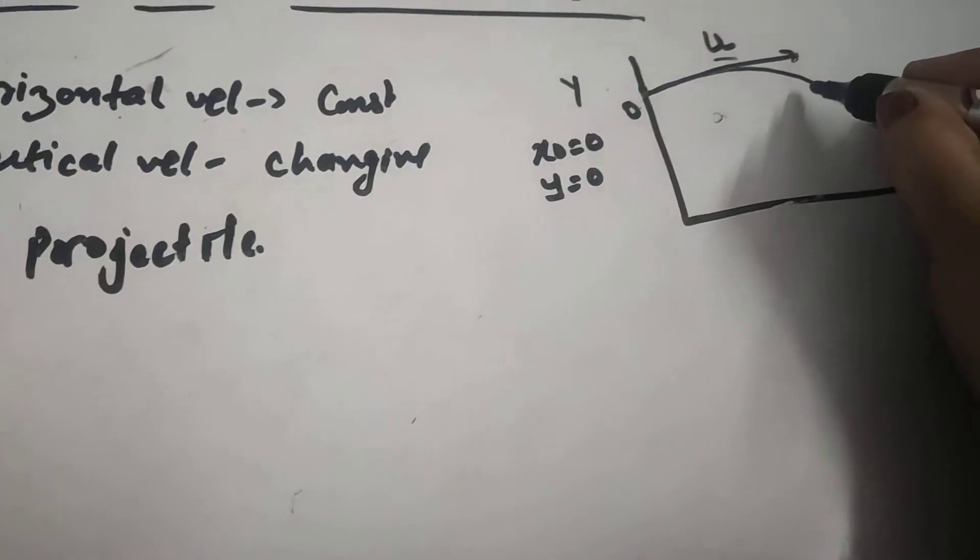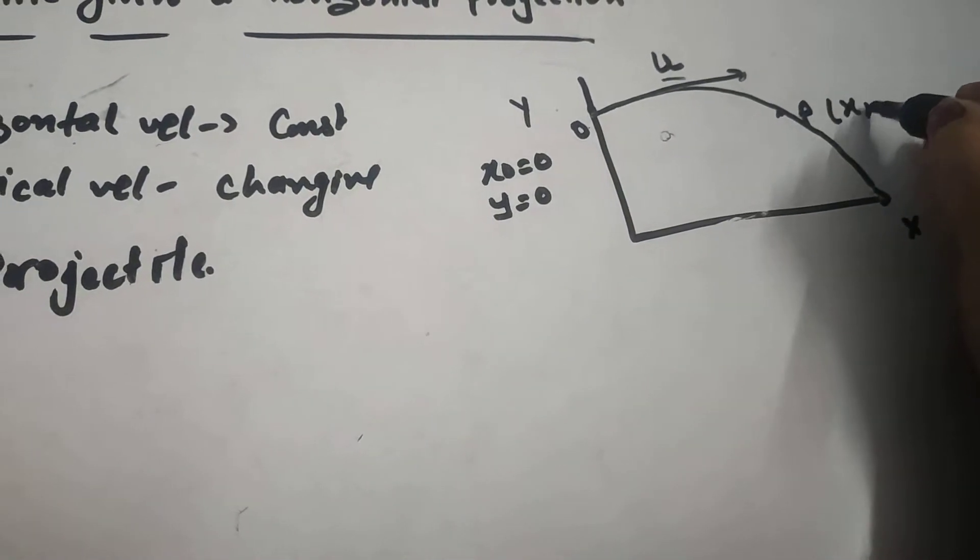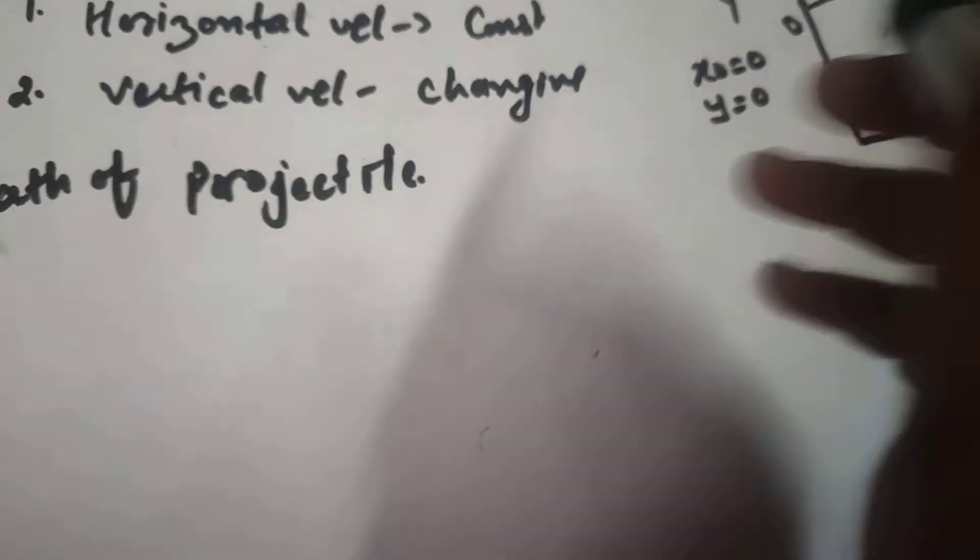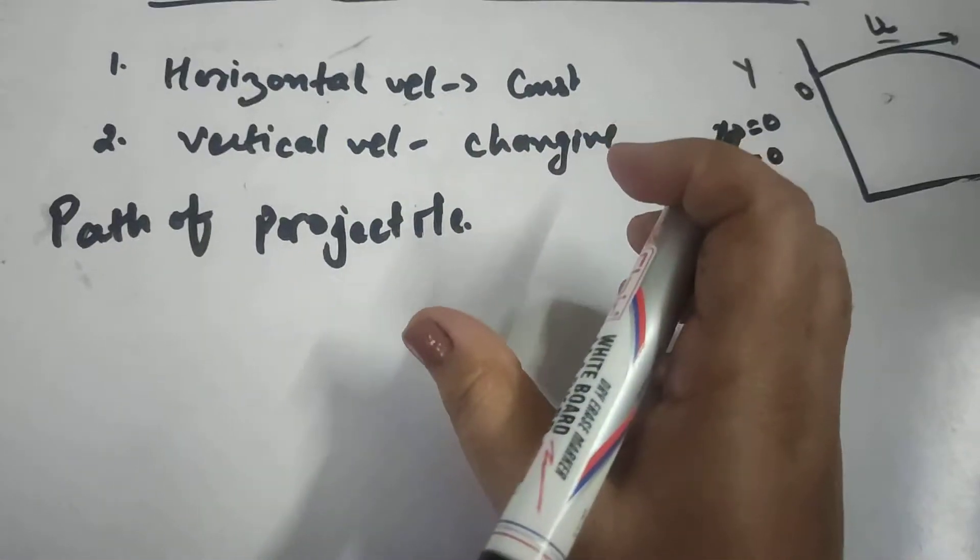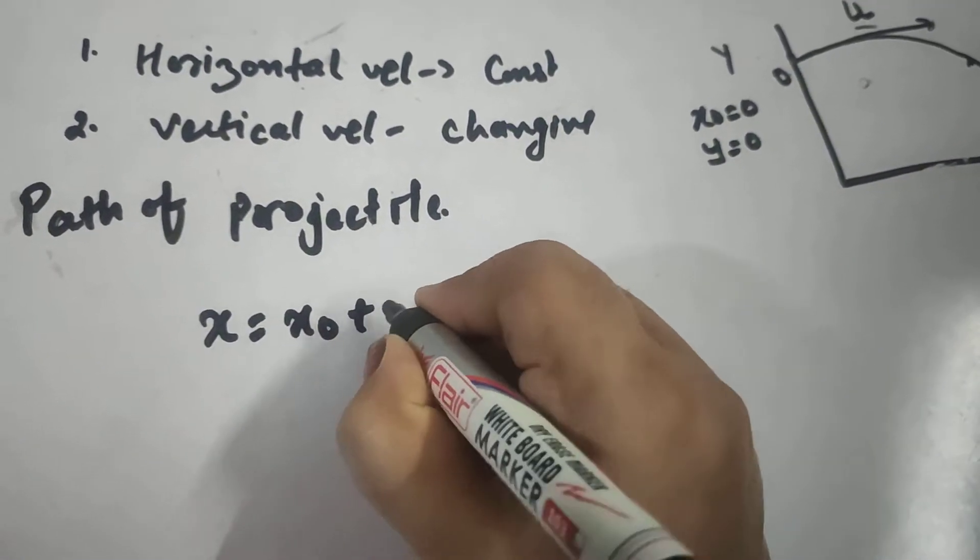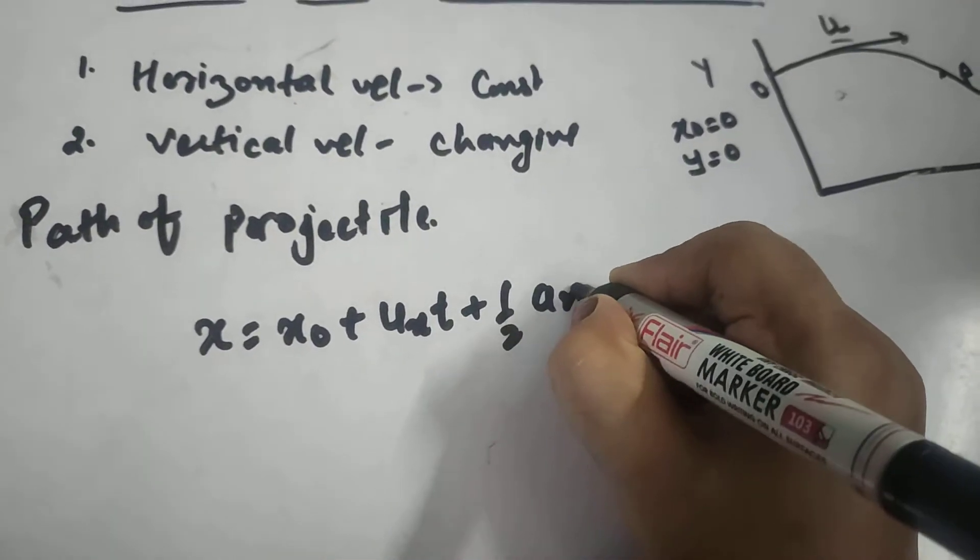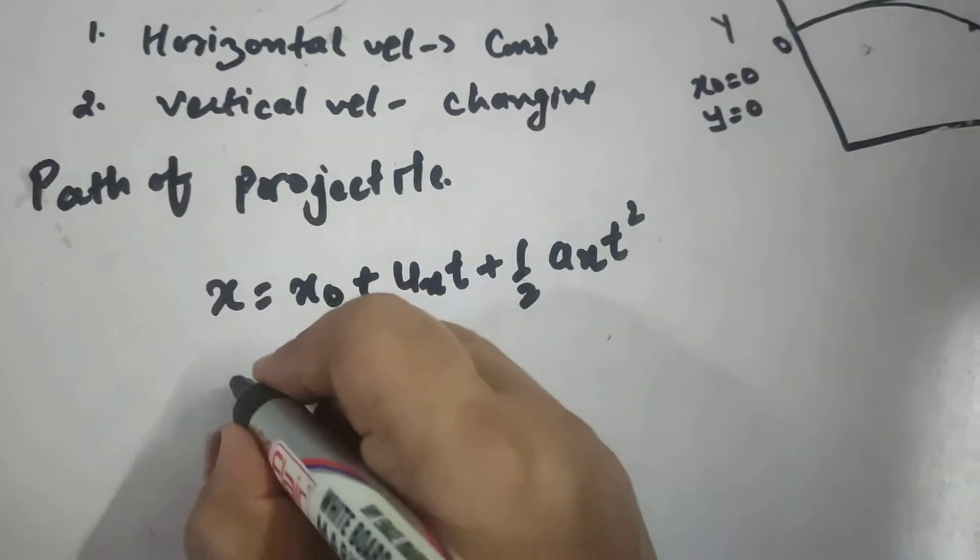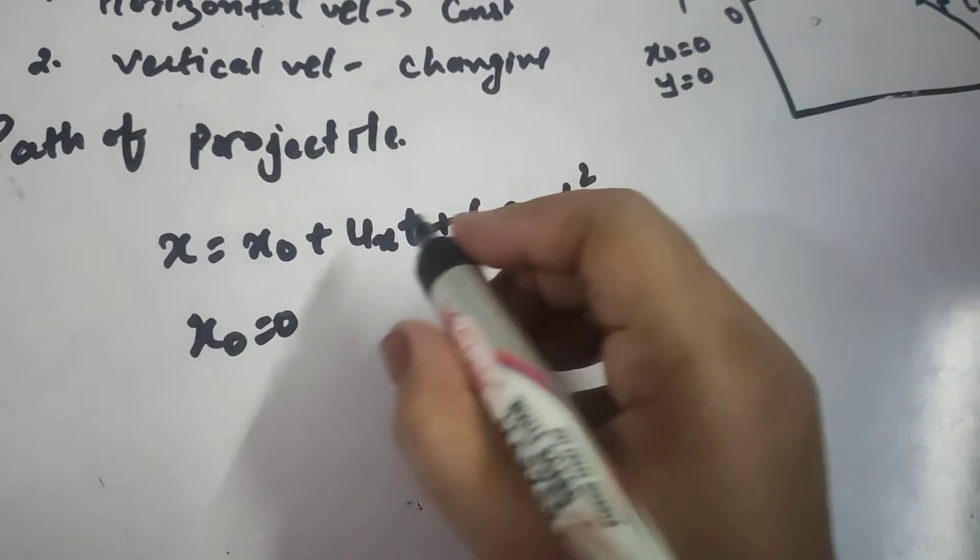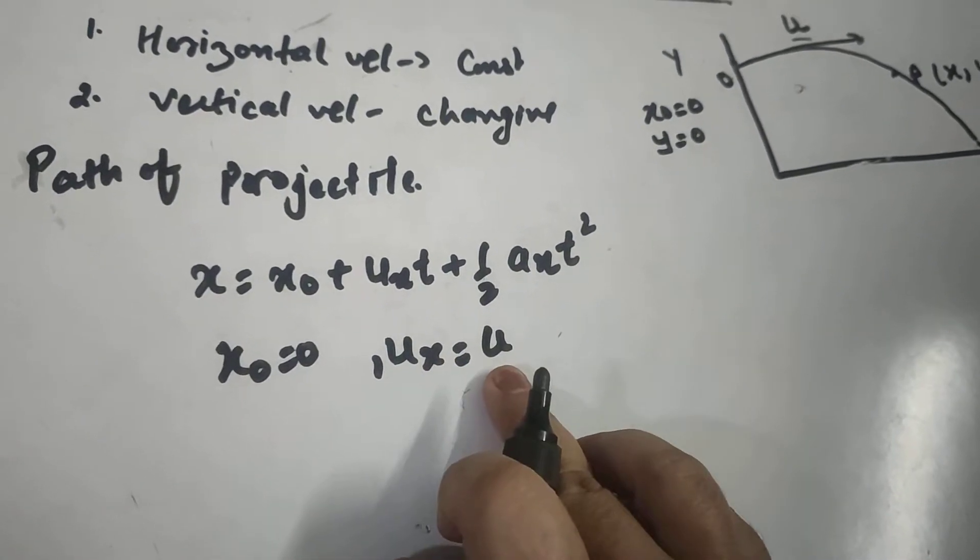At any point P, let the particle is having coordinates X and Y. So we know that the horizontal direction equation of displacement is given by X equals X naught plus UX·T plus half AX·T². Here clearly X naught equals 0 as it is considered to be at origin. UX equals U, which is the horizontal velocity.